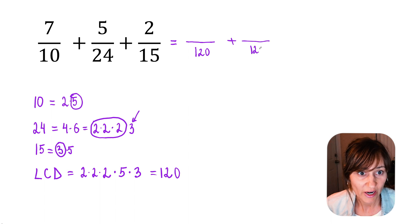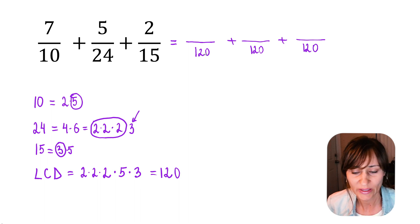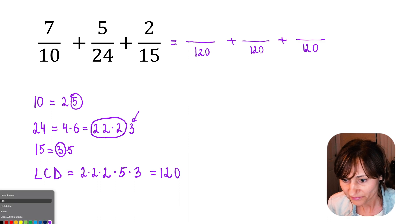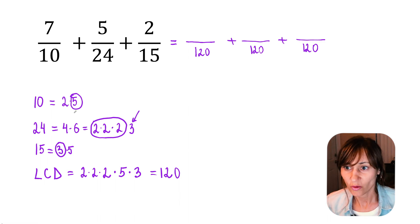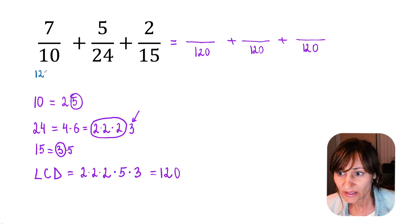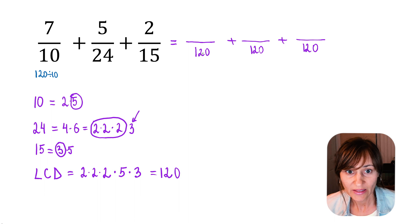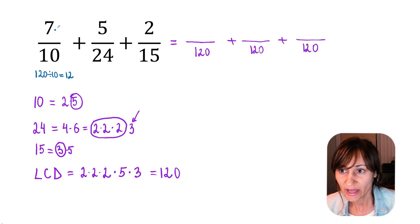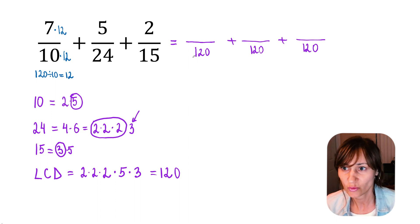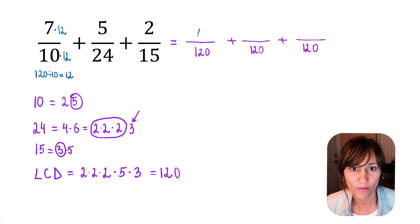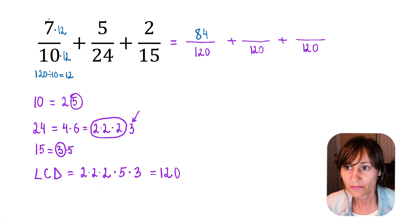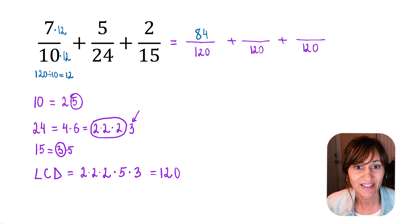Let's set up our fractions. We are going to rewrite each fraction so it has the denominator 120. Let's switch colors so we can see. Let's start with the first fraction. 120 divided by 10 is 12. So in the first fraction, I multiply the numerator and denominator by 12 to get the common denominator 120. 7 times 12 is 84, so my new numerator is 84. 10 times 12 is 120. We rewrote the first fraction with a common denominator of 120.